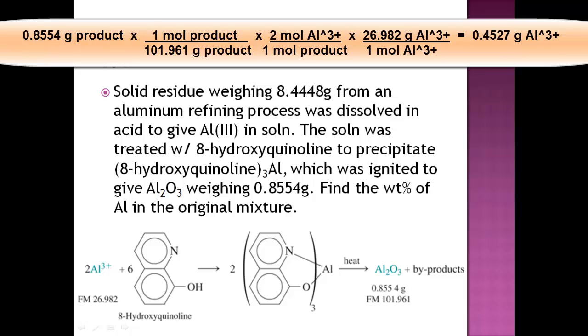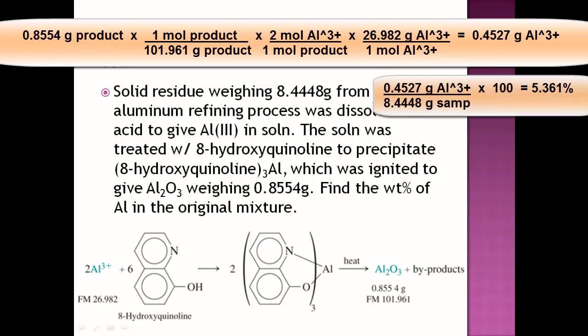The only thing you have to do to find the weight percent is put the 0.4527 grams of aluminum divided by the solid residue, the mass of the sample, which was 8.4448 grams of the unknown, and then times it times 100, and you should get 5.361%. So these are really simple. They're exactly like what you used to see in general chemistry. These shouldn't give you any problems whatsoever.